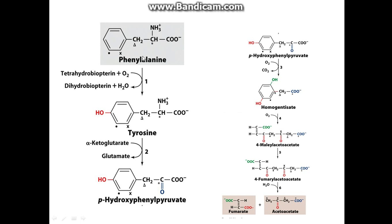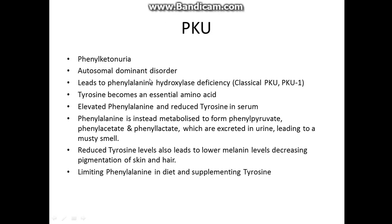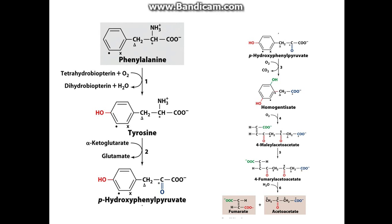Phenylalanine is heavily related to PKU, which I'll discuss now. PKU — phenylketonuria — is relatively common and is an autosomal recessive disorder. A deficiency of phenylalanine hydroxylase causes classical PKU, or PKU1. As such, tyrosine becomes an essential amino acid because your body can't produce enough of it.